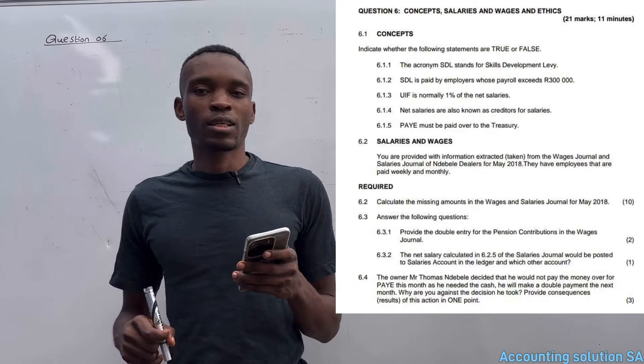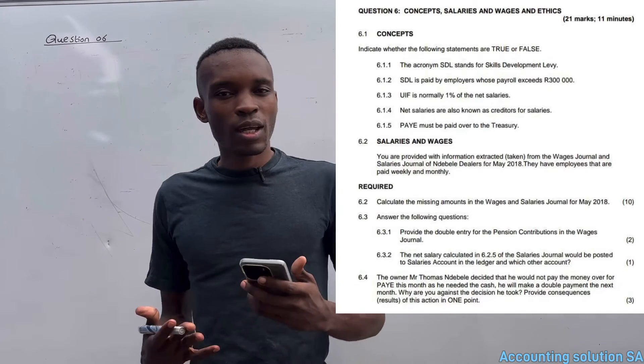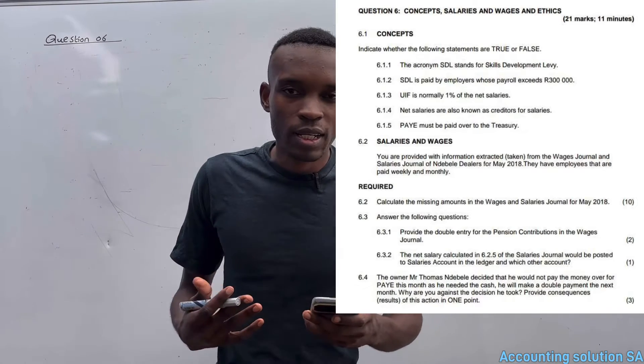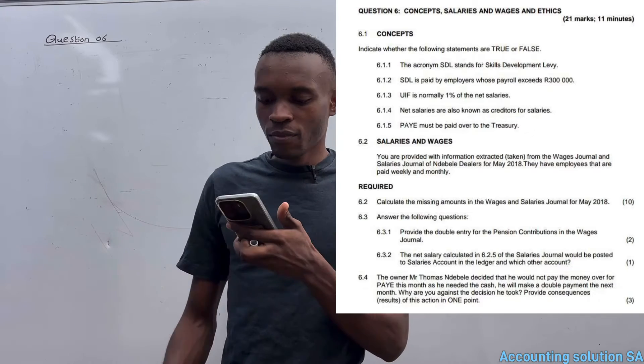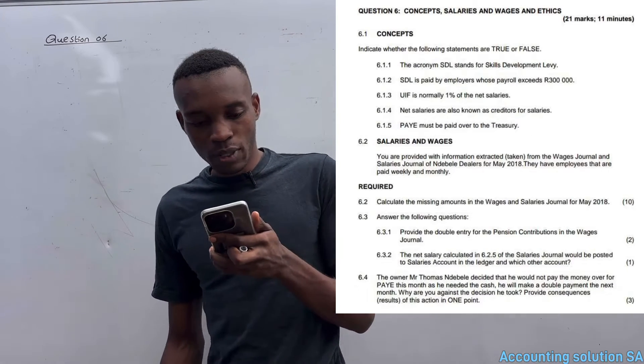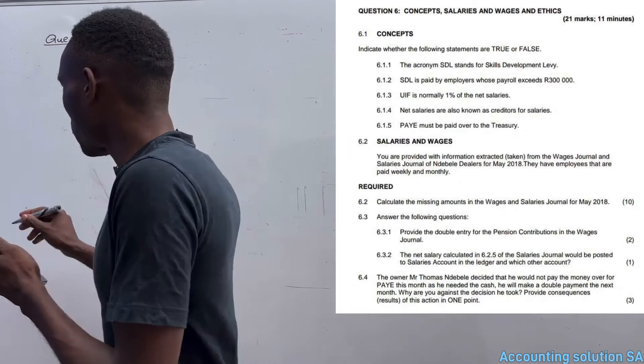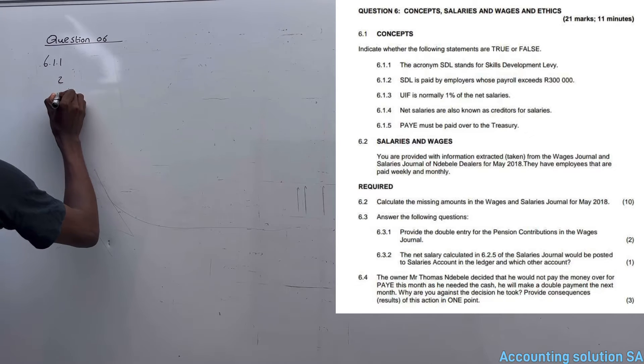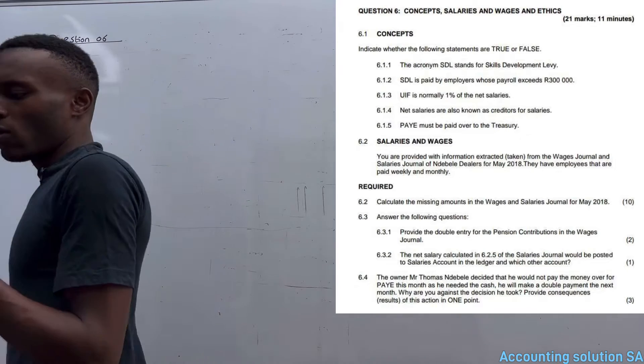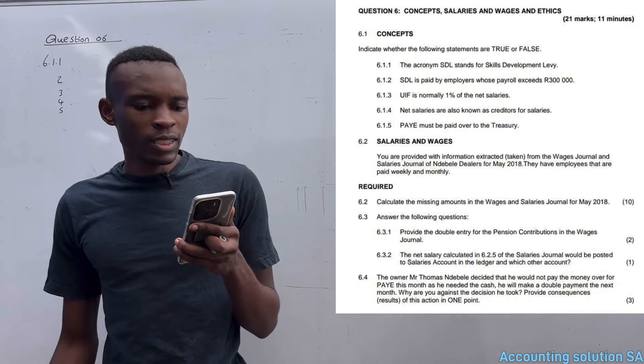This question is from a chapter of Salaries and Wages. The first part that we have is a true/false which we can't ignore in this case so that we will have some understanding. We have 6.1.1 until 6.1.5.